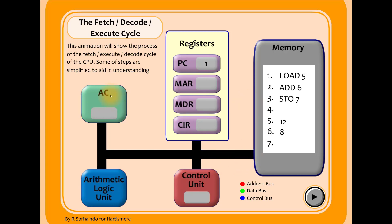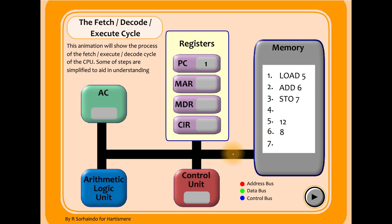Let's look at what you can see on screen. Here's our RAM and memory, with addresses one through seven. In addresses one, two, and three we have instructions: address one means 'load the data from address five', address two means 'add the data from address six', and address three means 'store the data to address seven'. In address areas five and six we have the values twelve and eight.